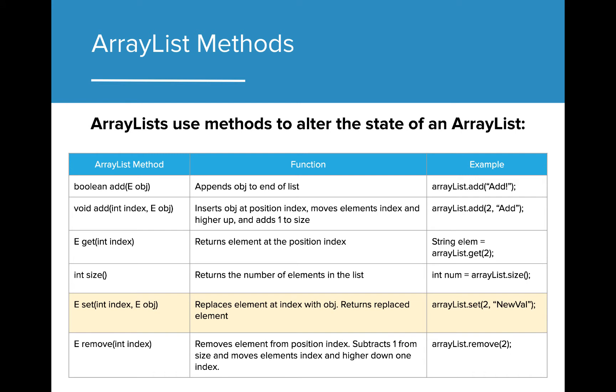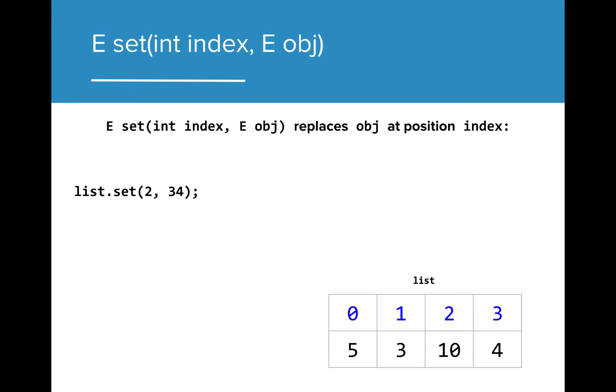Now that we know how to add and get objects from our ArrayLists, we need to know how we can change those same values. The set method replaces the current value at an index with a given value. In this example, we are setting the index 2 to the new value of 34. We can see that the value of index 2 in the list is then changed to reflect that value. The set method also returns the value that is being replaced to the existing program.